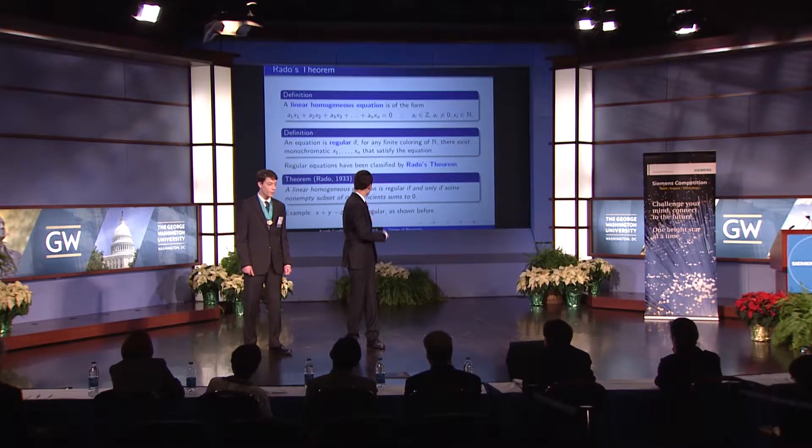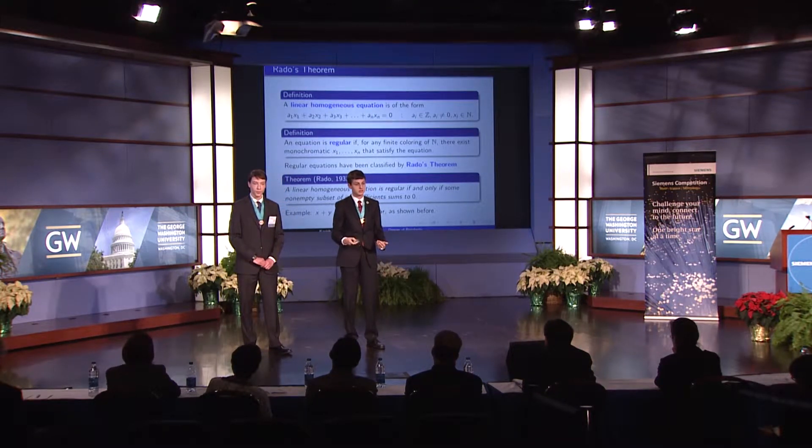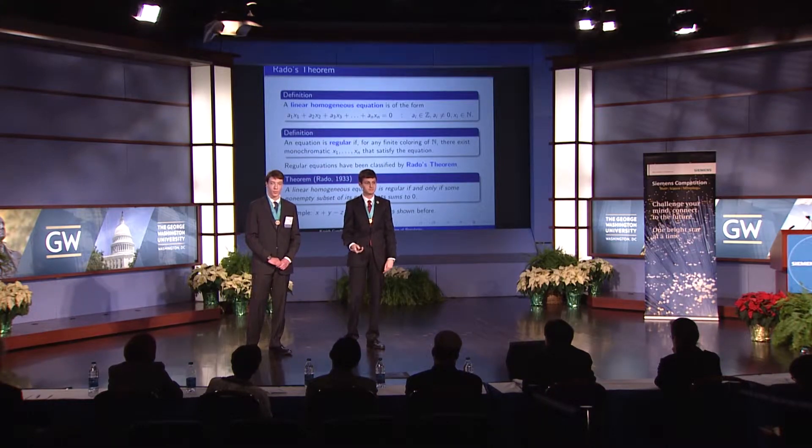An example is Schur's equation, x plus y minus z equals zero, which is regular by Rado's theorem since 1 minus 1 equals zero. However, not all equations are regular — only a small subset of all linear homogenous equations are regular. Therefore, we define non-regular equations by their R-regularity: an equation is R-regular if, for any finite coloring of the natural numbers with R colors, there exists a monochromatic xi satisfying the equation. In particular, a regular equation is just an R-regular equation for all positive integers R. An example of R-regularity is this equation here, which can be shown to be 2-regular. We further define the degree of regularity as the largest positive integer R such that the equation is R-regular.